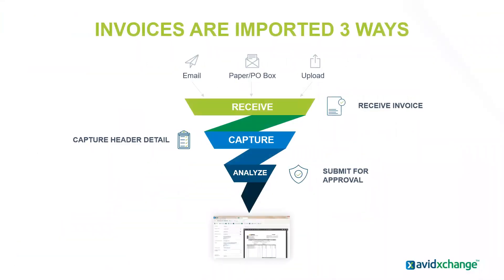Invoices are imported in three ways. By email: we set up a designated email address for suppliers to send invoices electronically, or you can forward existing email invoices to that address. By scanning: you can scan invoices directly to the portal. And by mail: we set up a lockbox and do a change of address with your vendors, so those invoices come to one of our two processing facilities across the country, where we open and scan them electronically for you.